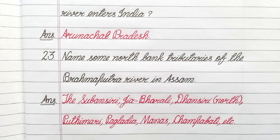Question number 23. Name some North Bank tributaries of the Brahmaputra River in Assam. Answer: the Subansiri, Jiyavarali, Thansiri North, Puthimari, Pagladhya, Manas, Sampavati, etc.